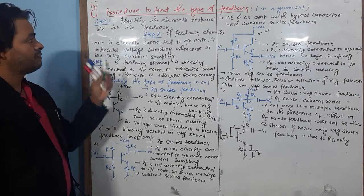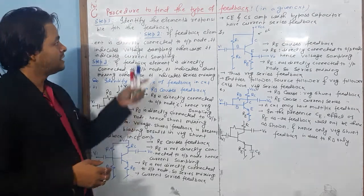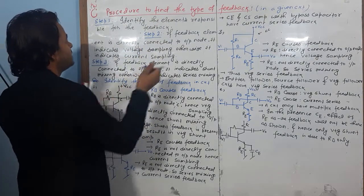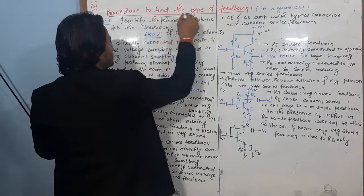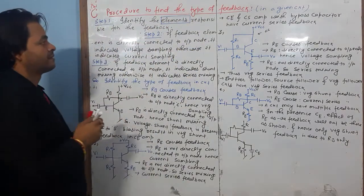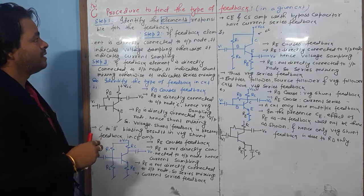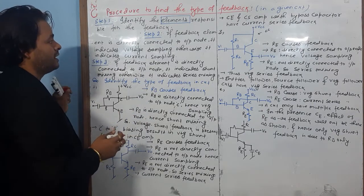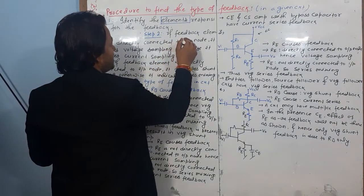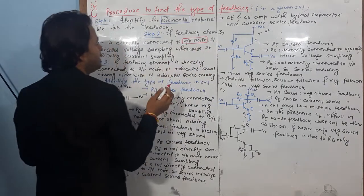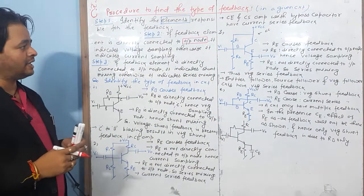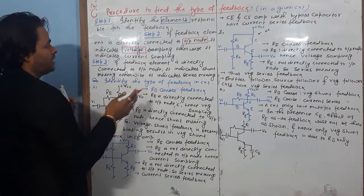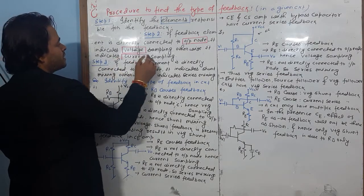Step 1: First of all, identify the elements responsible for the feedback. It is very important to identify these elements. If the feedback element is directly connected to the output node, then it indicates voltage sampling. Otherwise, it is current sampling.